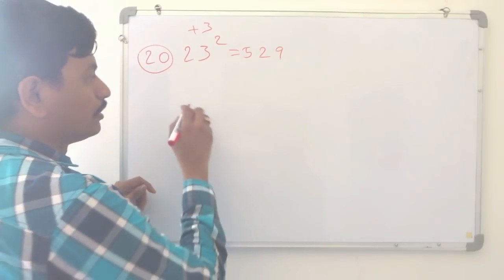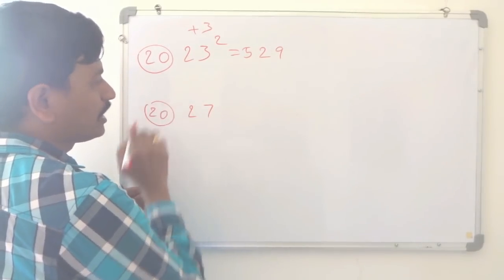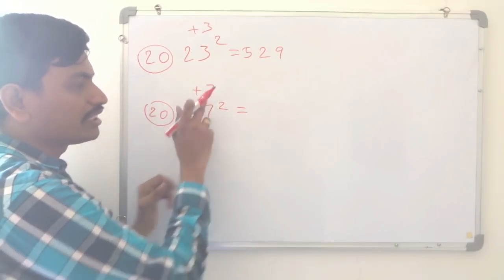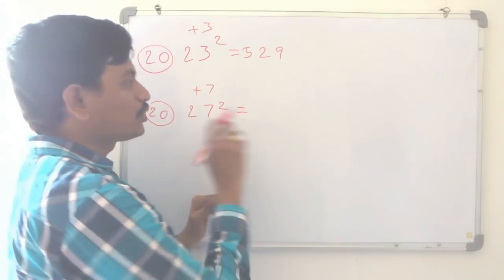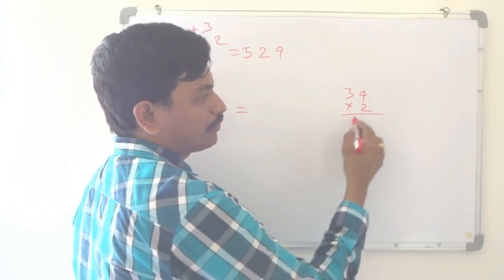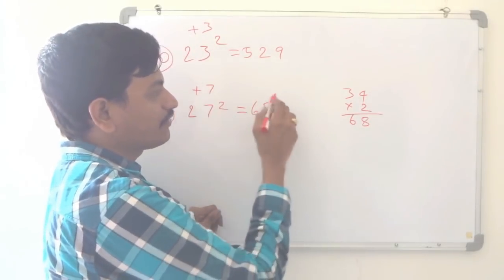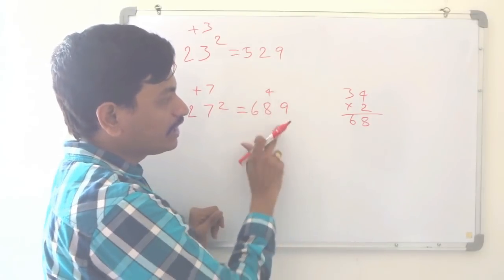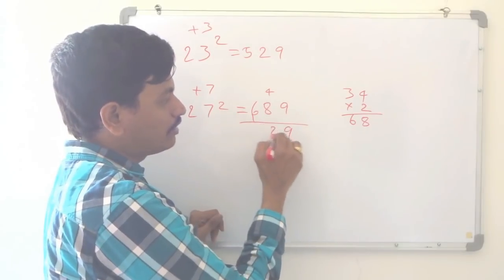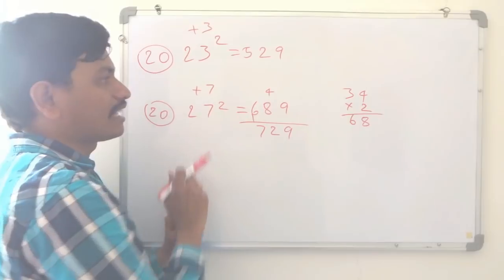I will take another number: 27. It is nearer to 20. How much bigger? Plus 7. So 27 plus 7 is 34; double it to get 68. And 7 squared is 49; we need only one digit, so write 9 and carry 4: 68 plus 4 is 72. So 729 is the square of 27.